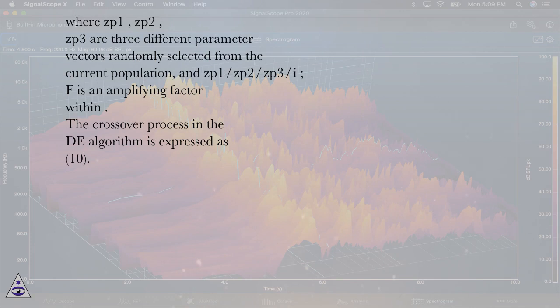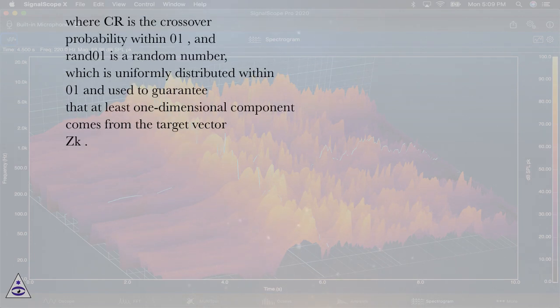The crossover process in the DA algorithm is expressed as equation (10), where Cr is the crossover probability within [0,1], and RAND[0,1] is a random number which is uniformly distributed within [0,1] and used to guarantee that at least one dimensional component comes from the target vector Zk,g.